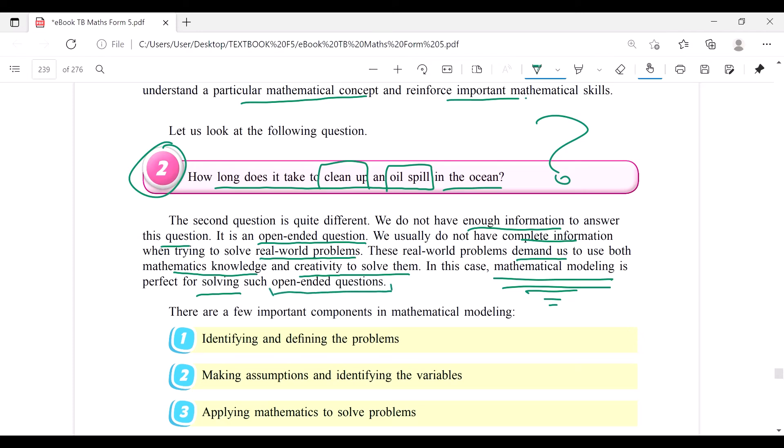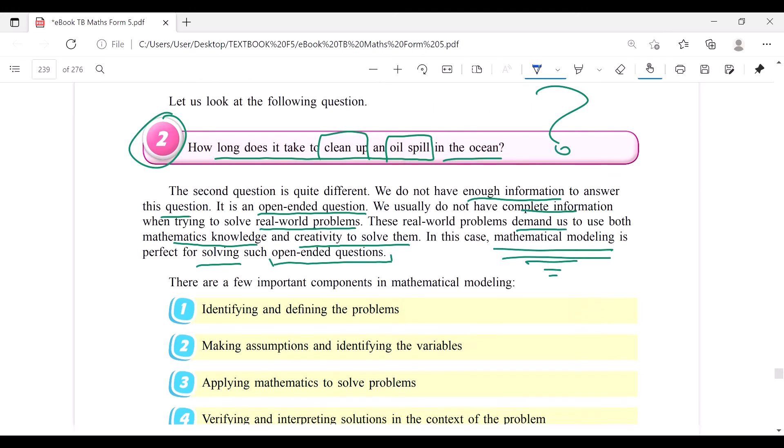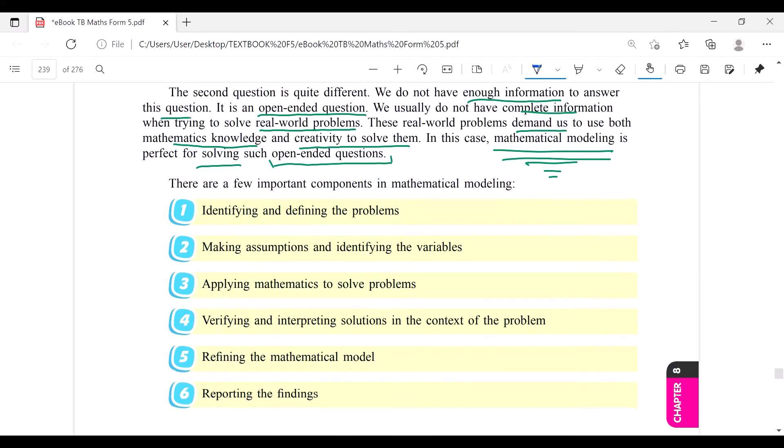Let's see how it is. What is the mathematical model? There are a few components. Remember, if you can see here, you have six components. First, what you should do when you have this problem, you identify and define the problem. You must know what is the problem all about. Second one, make assumptions and identify the variables. What are the variables that we can use? Assumptions also very important. Number three, applying mathematics to solve the problem.